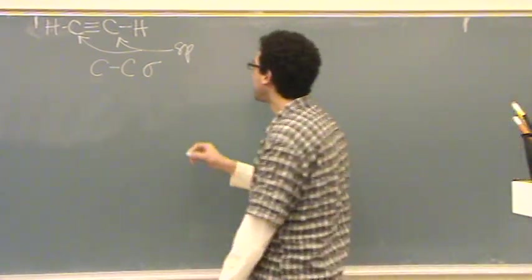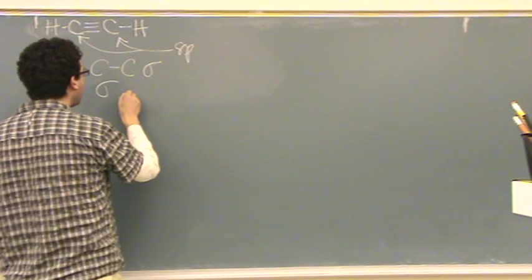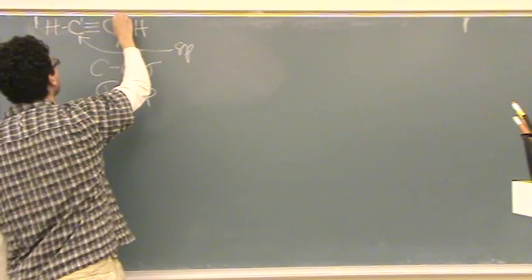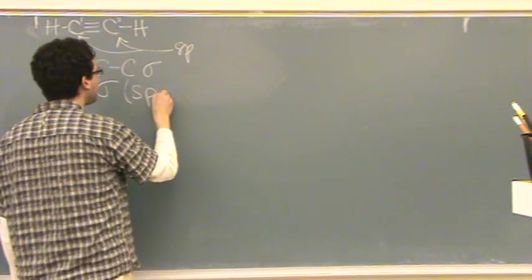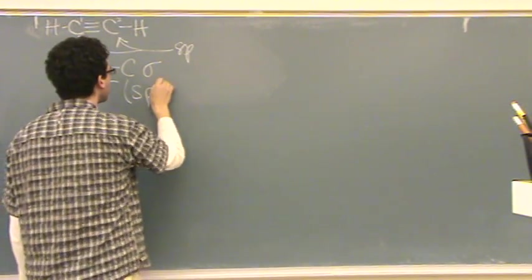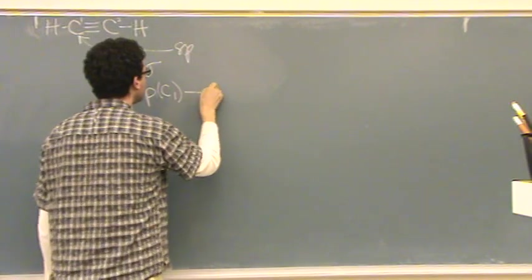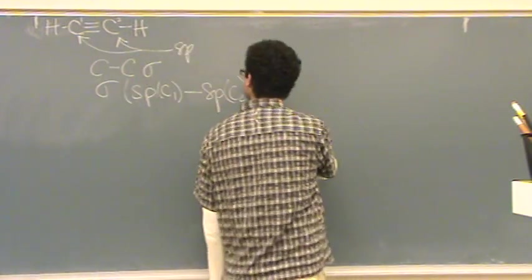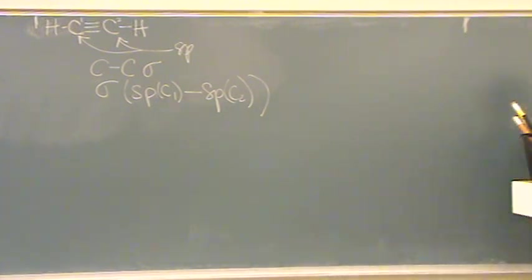So this becomes pretty simple. This is a sigma bond made out of an SP. I'll just label the first one carbon-1 and the second one carbon-2. So it's an SP from carbon-1 bonded to an SP hybrid orbital from carbon-2. And that's it.